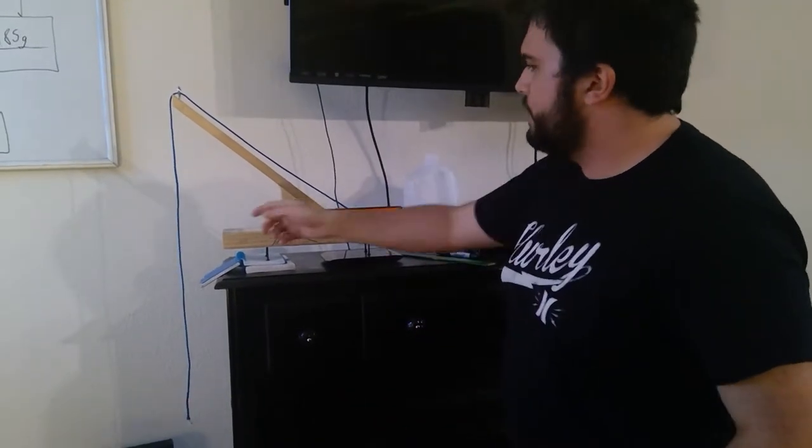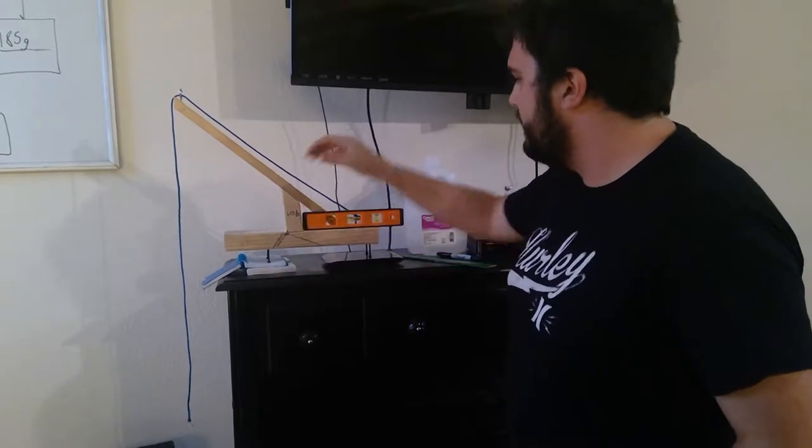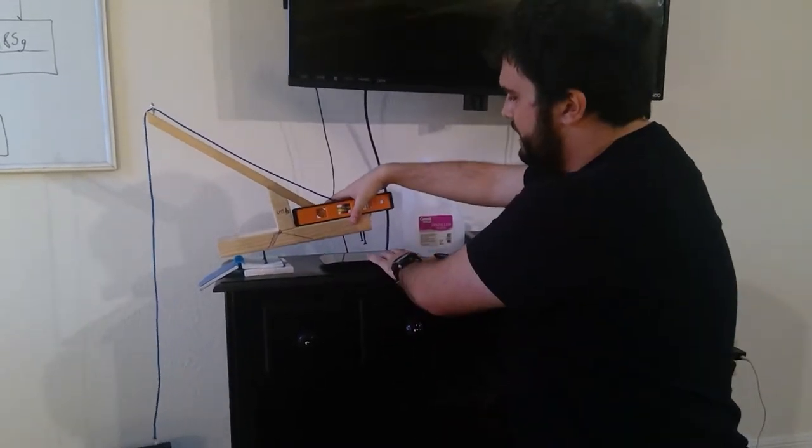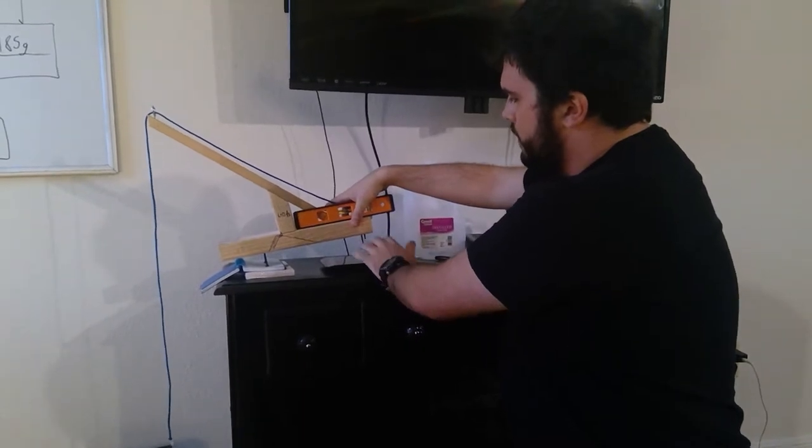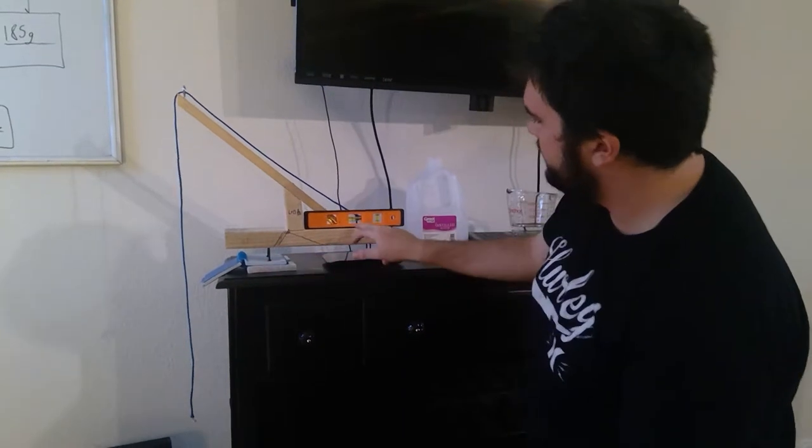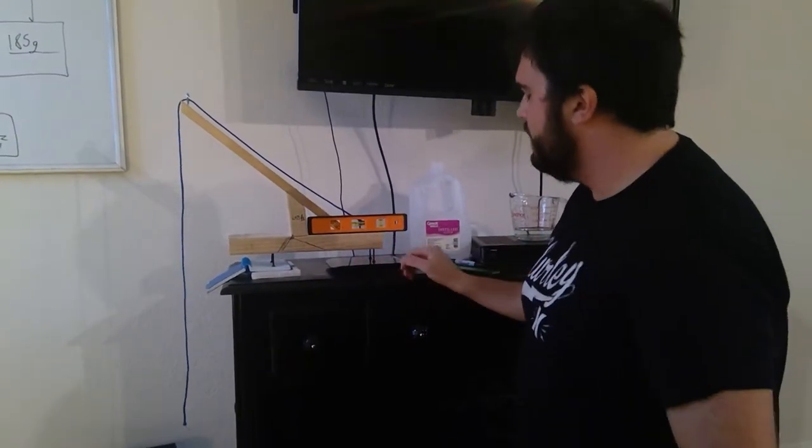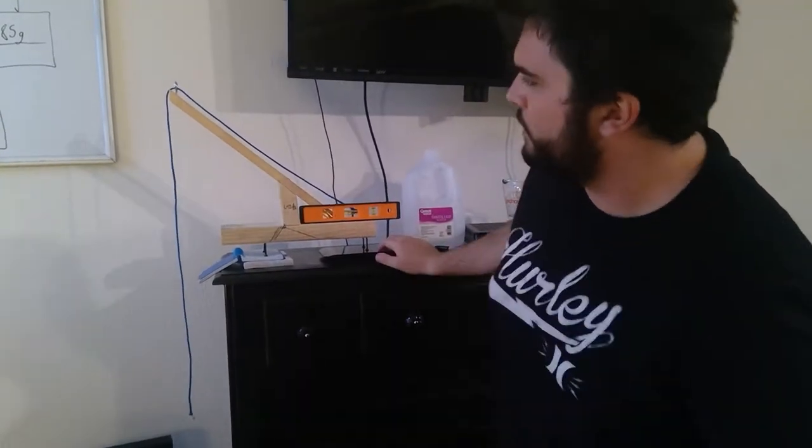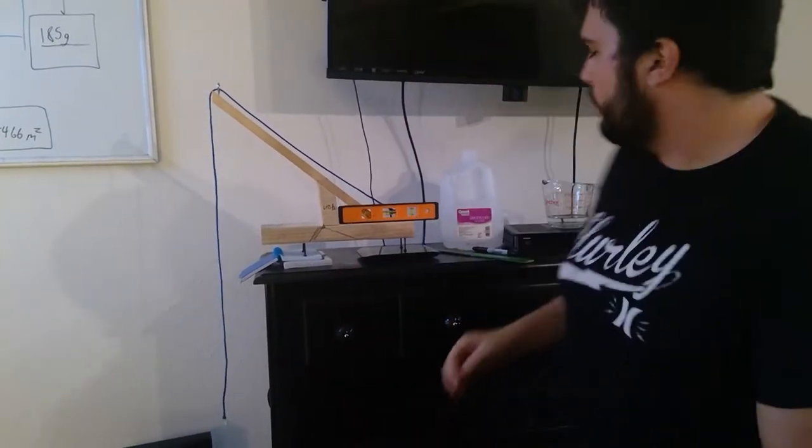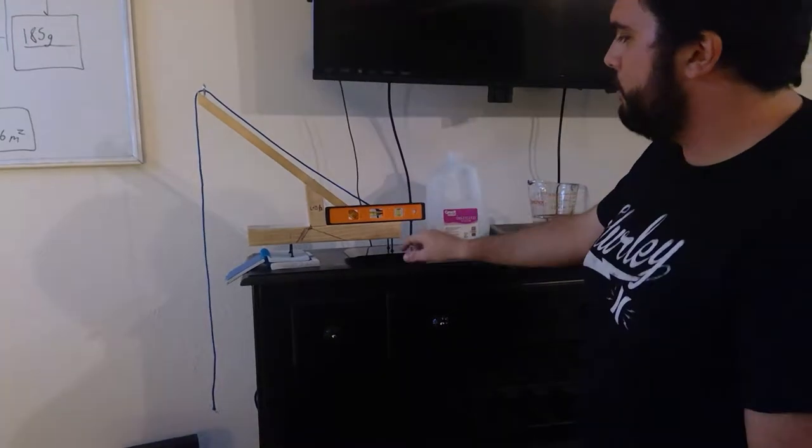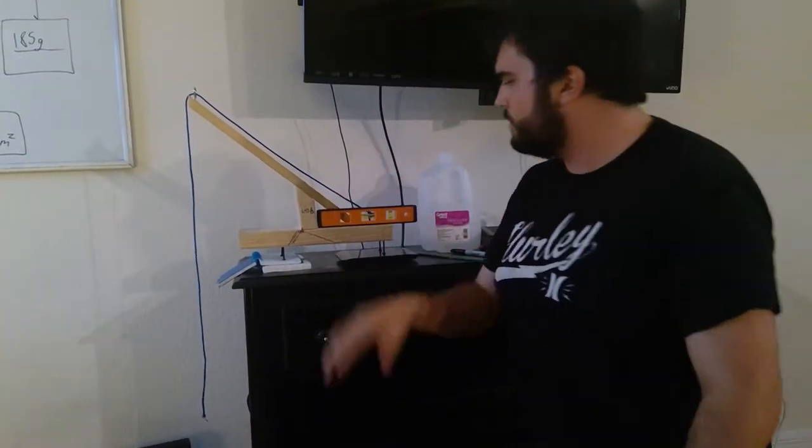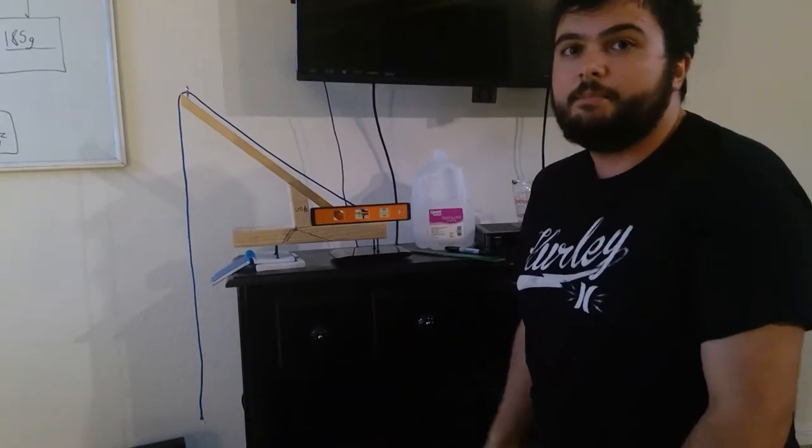First we took the crane, took our scale, tarred it to zero, put it on and added note cards underneath until we got it leveled. Once it was leveled it read a force and we attached the jug, which we took into account before. Then we filled it slowly with water until it hit zero and the legs were just barely almost touching, where you could slide a piece of paper underneath.